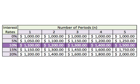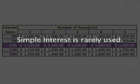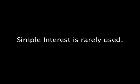That's because my interest is always calculated on the original principle of $1,000. Simple interest is normally used for short periods, such as 30 or 60 days.